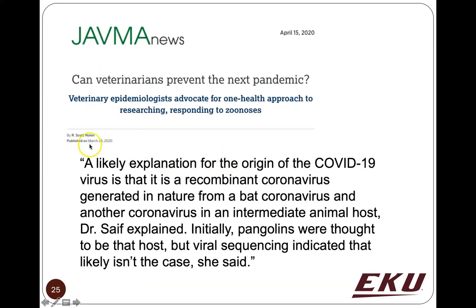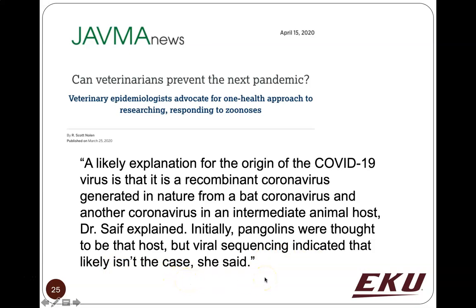As I'm recording this, a paper scheduled for publication in the Journal of the American Veterinary Medical Association in April shared the news that a likely explanation for the origin of the COVID-19 virus is that it's a recombinant coronavirus from a bat coronavirus and another coronavirus in an intermediate animal host. They initially thought pangolins were that host, but viral sequencing indicated that is likely not the case. So we still don't know for sure if pangolins are responsible, and there is still a lot of research that needs to be done.